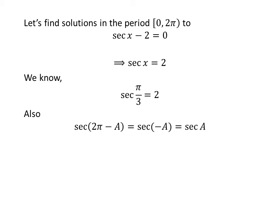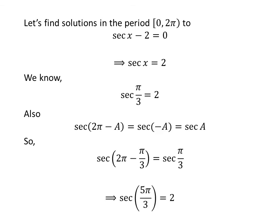We know the value of secant of x repeats after an interval of 2 times pi, so secant of 2 times pi minus a is equal to secant of minus a. We also know the trigonometric identity secant of minus a is equal to secant of a. Applying this identity, secant of 2 times pi minus pi upon 3 is equal to secant of pi upon 3. Since 2 times pi minus pi upon 3 equals 5 times pi upon 3, we get secant of 5 times pi upon 3 is equal to 2.